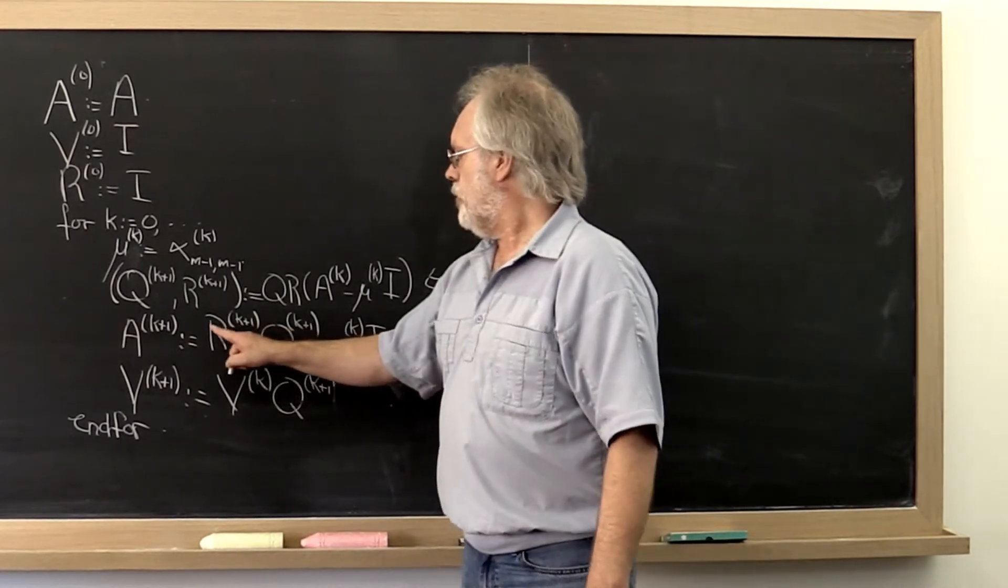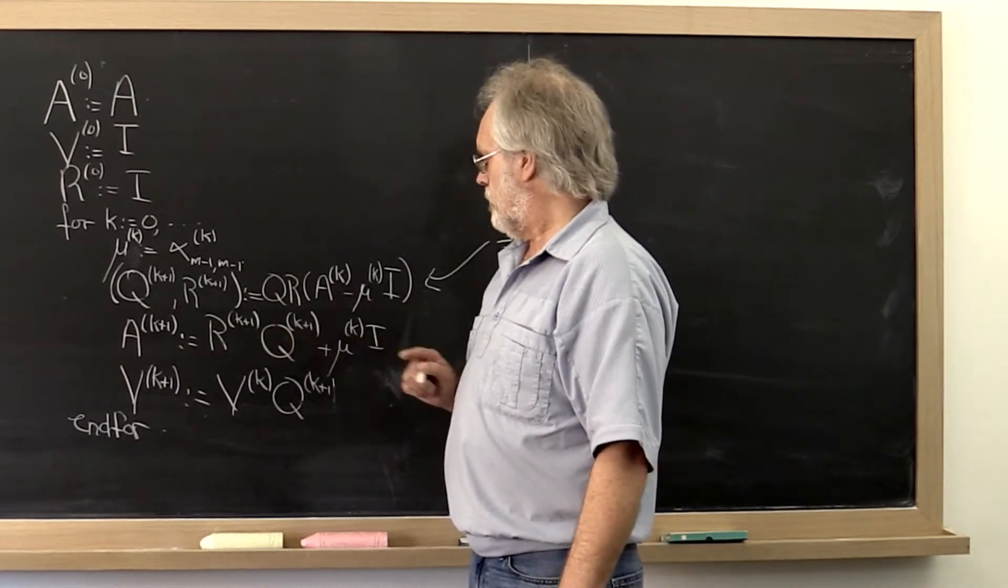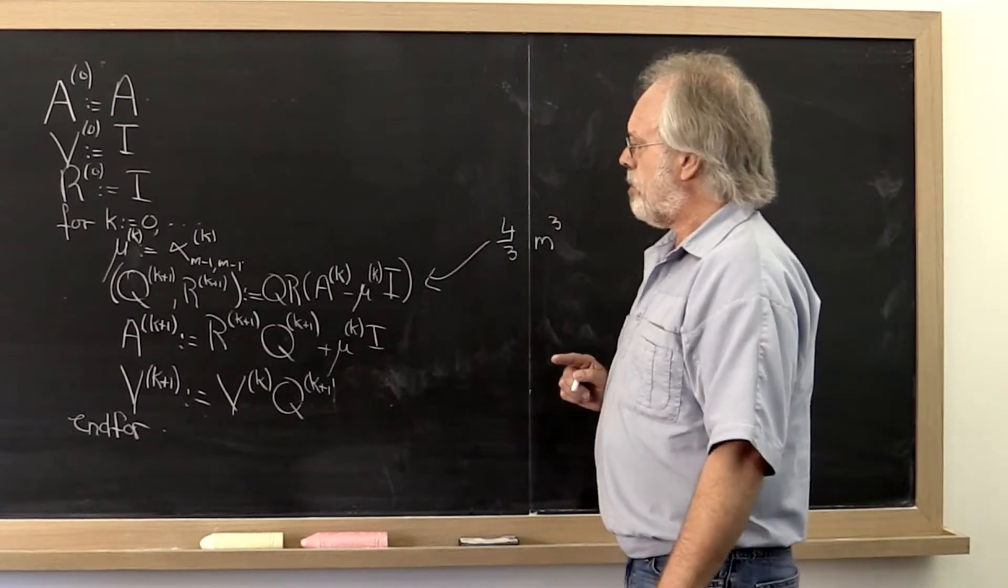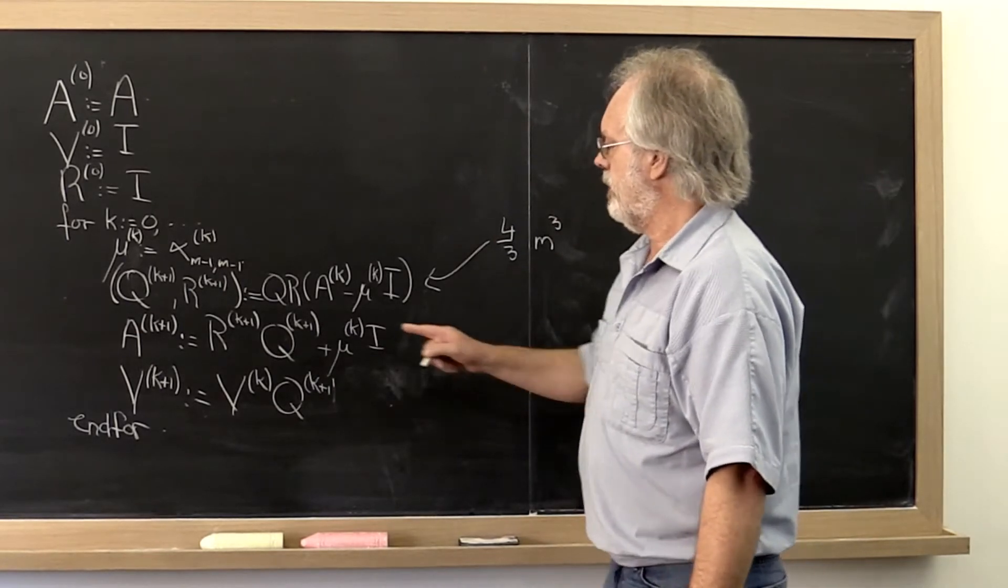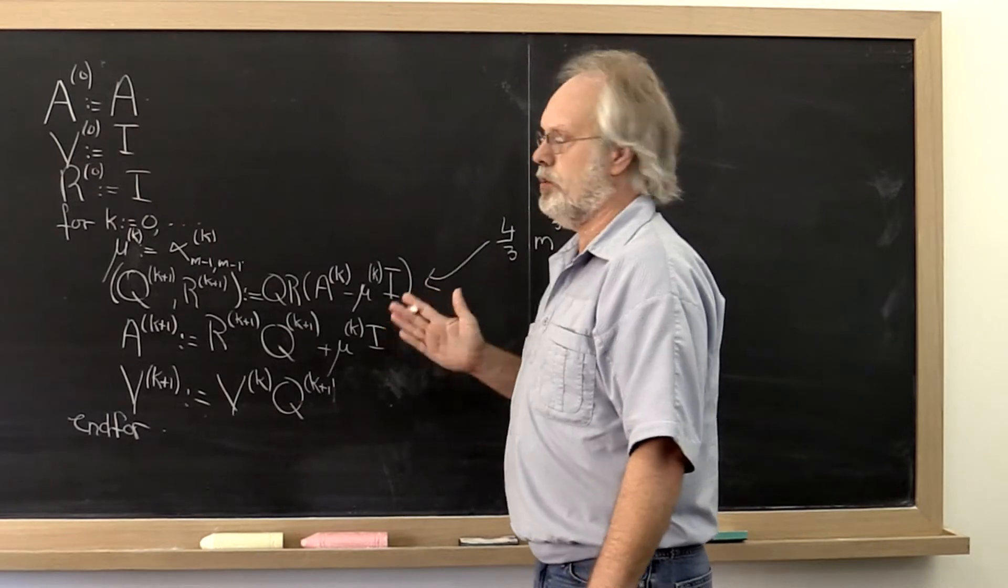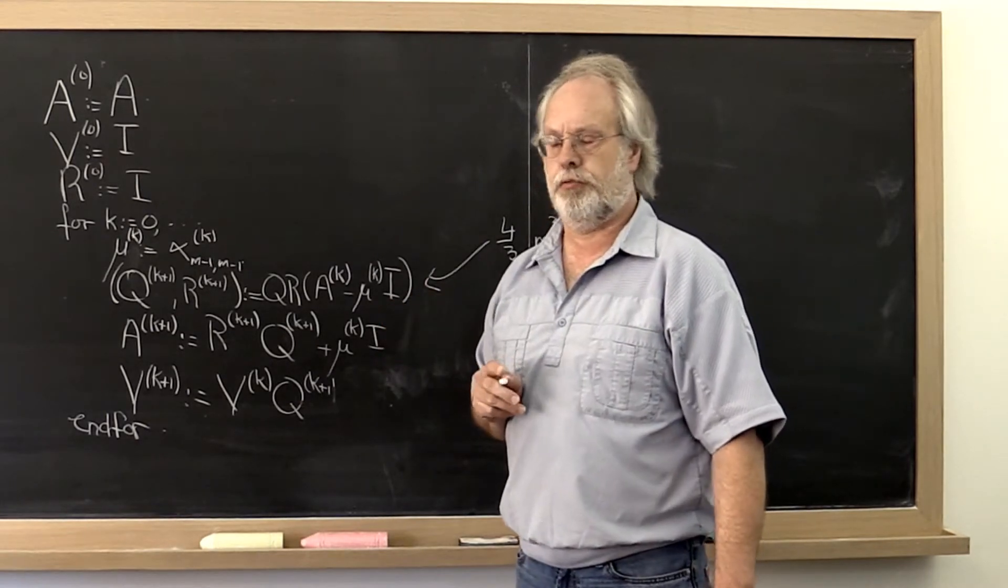We then want to do R times Q. And there's probably some way of taking advantage of the fact that we have Q as individual Householder transformations.